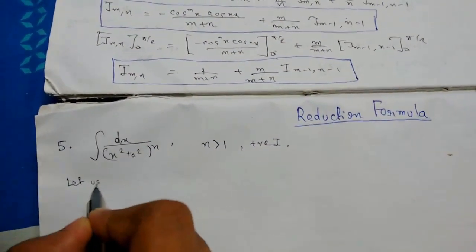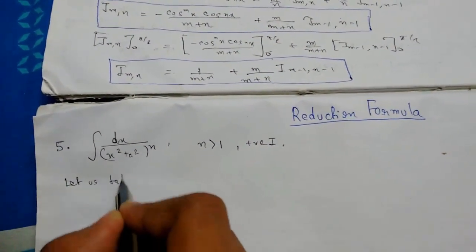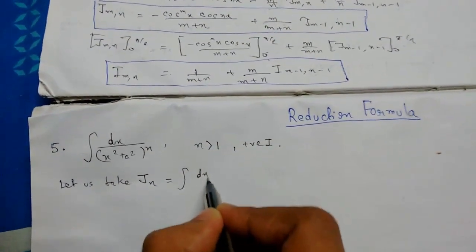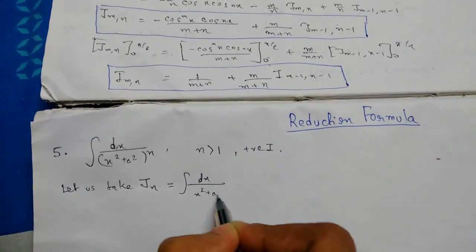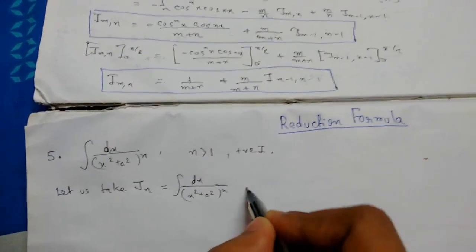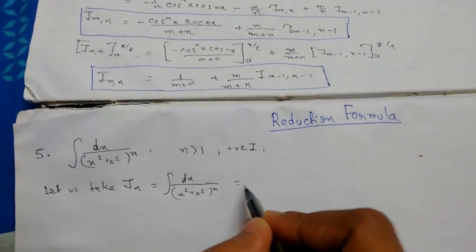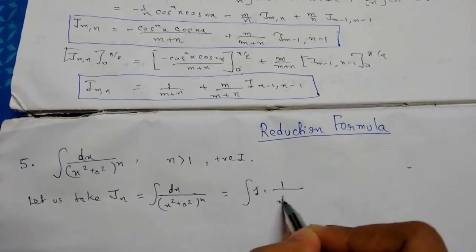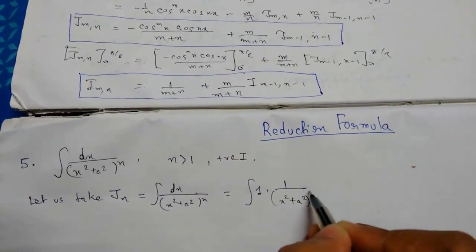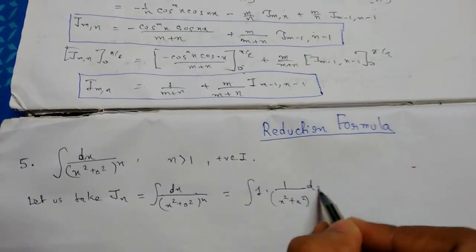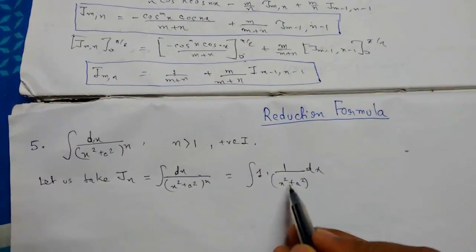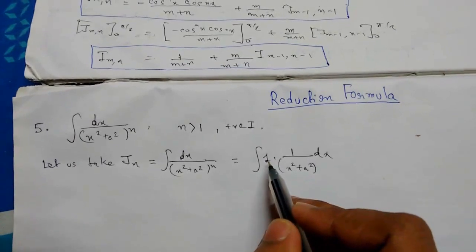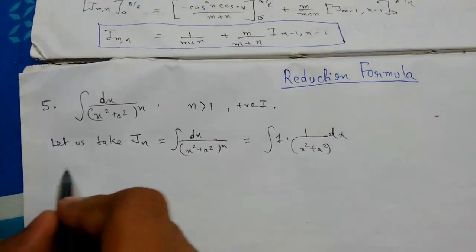So let us take J(n) to be this integral. We will apply integration by parts here. Let me arrange this so we can understand it properly. So here, 1 upon (x² + a²)^n will be our first function and 1 will be our second function.